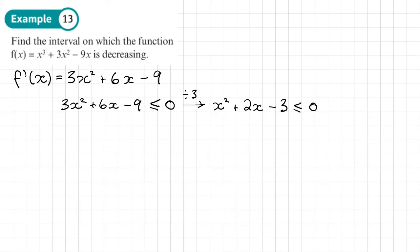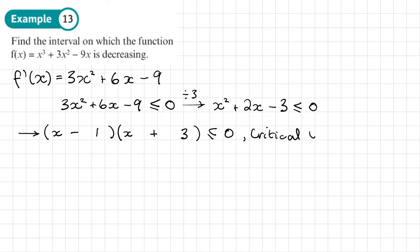The way we solve these quadratic inequalities is to factorize. Hopefully this factorizes — the two numbers need to be 1 and 3, and we want +3 and −1, giving us (x + 3)(x − 1) ≤ 0. This gives us what we call the critical values: x = 1 and x = −3.